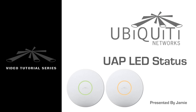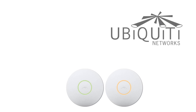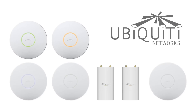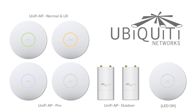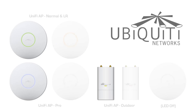In this video, I'll explain the different LED statuses which appear on UniFi AP models. With the exception of the UAP Pro, all UAP models feature green and orange LEDs to provide insight as to the UAP status. The UAP Pro features a blue and white LED.